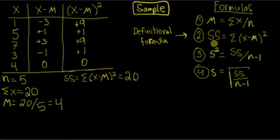Now that we have our sum of squares value of 20, we want to calculate our sample variance.